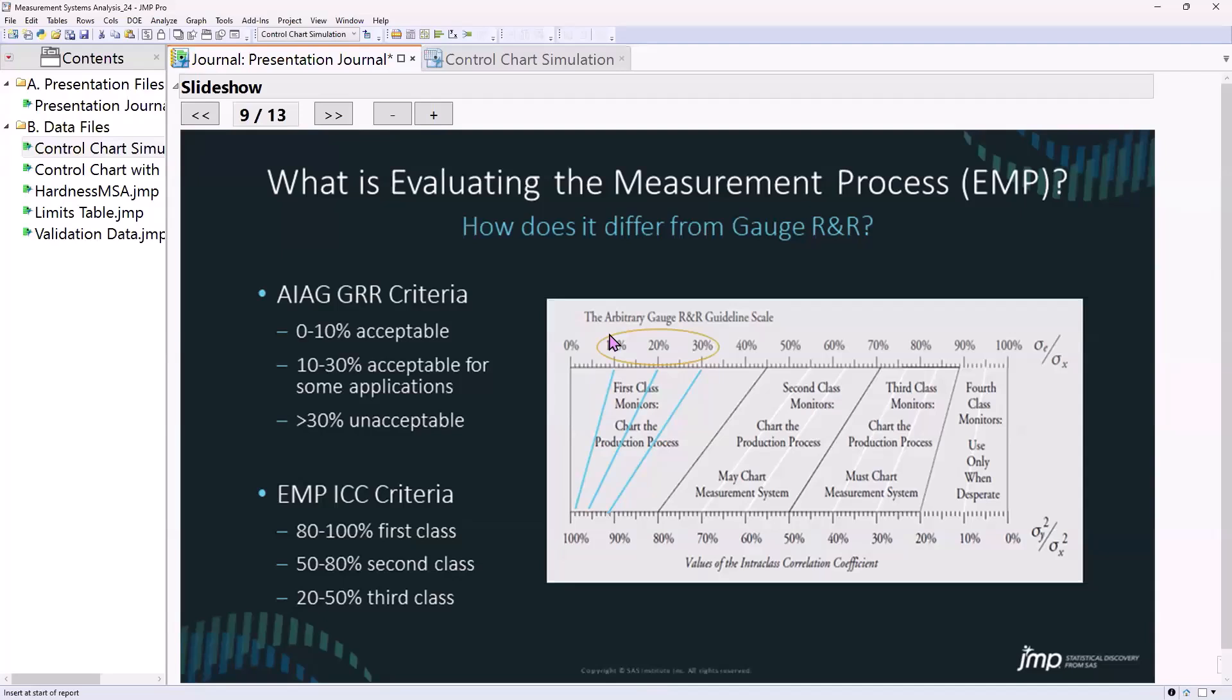What I learned in practice in my career is that you can have very effective gauges that have a much lower percentage. In fact, Wheeler actually has a nice proof showing that it's mathematically incorrect to use a ratio of standard deviations to do this. Barring that aside, let's just talk specifically about the percentages.